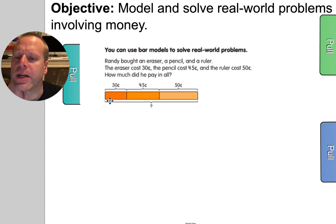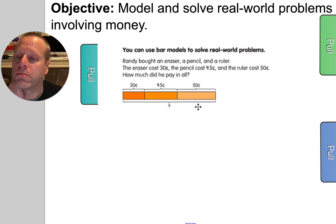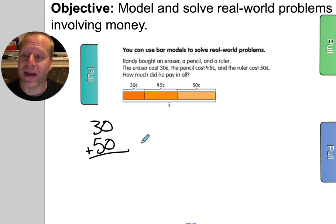Randy bought an eraser. Here's Randy's eraser. He bought a pencil. There's his pencil. And he bought a ruler. There's his ruler. How much did he pay in all? So in this case, we're taking part, part, part, whole. We're still missing the whole thing. We're still adding. But now we might have to do it in two steps. You might have to put two of these numbers together. First, I'll do the 30 and the 50 first. And then you might take that answer and add even more. You might have to add 45 more to whatever it is you got to get the whole answer here. Does that make sense? Show you another one.